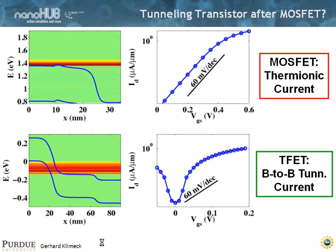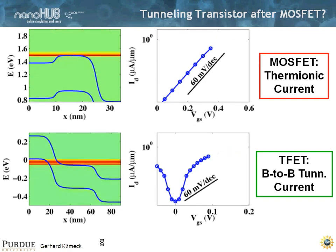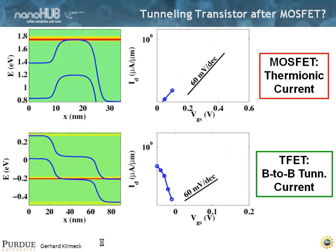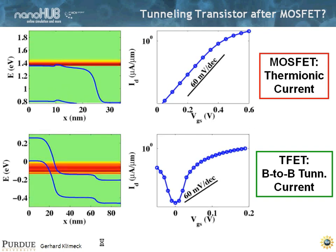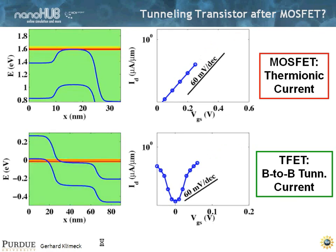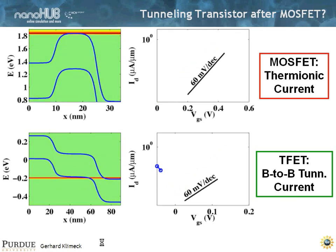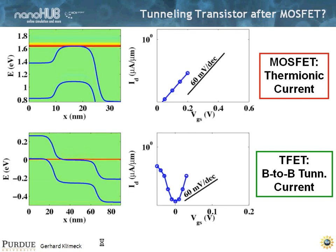Now, band-to-band tunneling devices also have their own difficulties, but that is one appeal that they have, that you can possibly turn them on more rapidly than you could turn a MOSFET off. So there's a lot of research being undertaken now on these so-called steep sub-threshold swing devices.